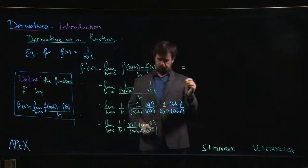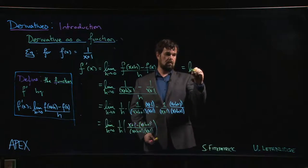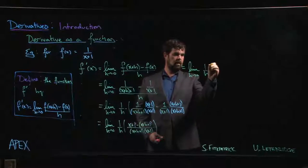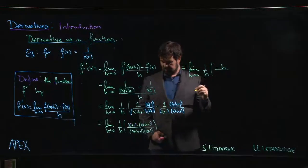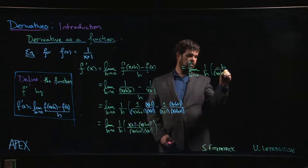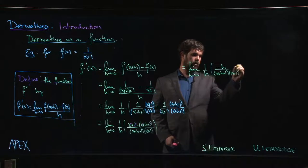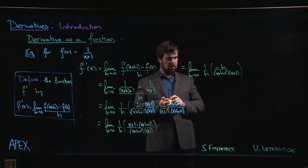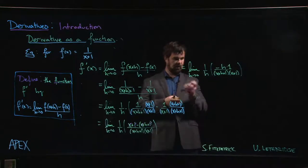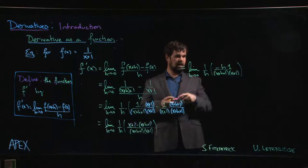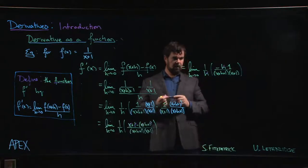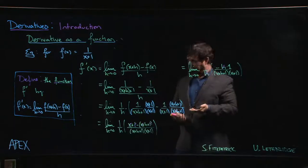What are we left with? Let's come up here. The limit as h goes to 0 of 1 over h times minus h over x plus h plus 1 times x plus 1. If you want to think of that h as h times 1, now you see that we can cancel, right? h over h, those cancel out.